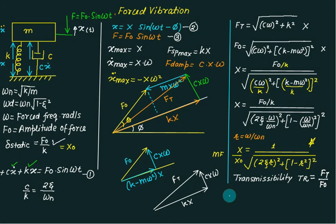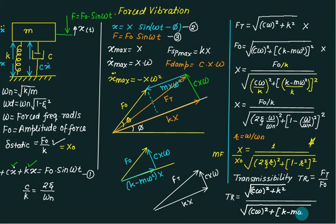And therefore you will get transmissibility equals to under root of C into omega whole square plus K square upon C omega whole square plus K minus M omega square and then again whole square. X and X is cancelled.